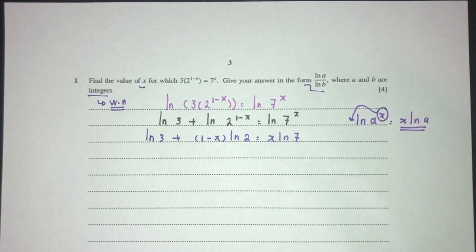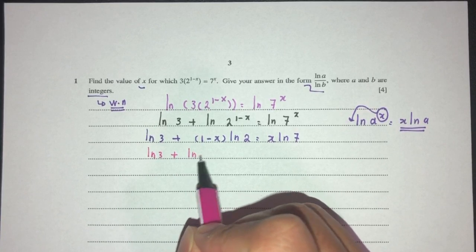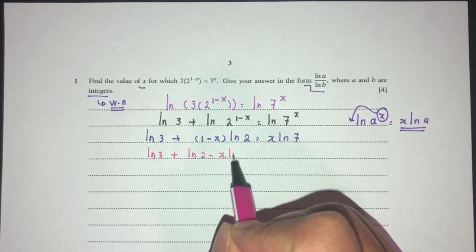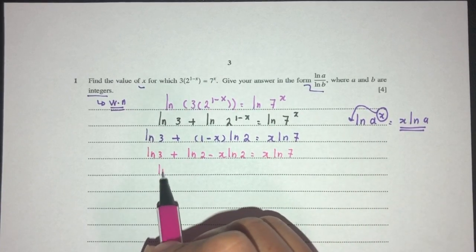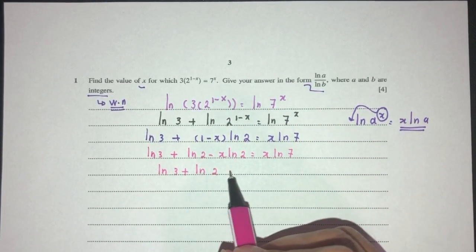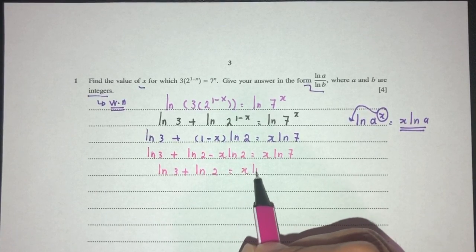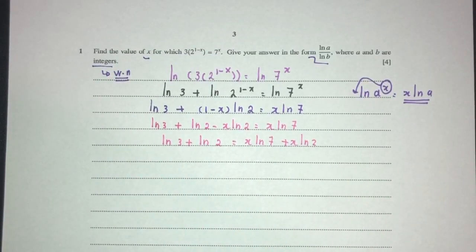We have to simplify, expand. That'll become ln 3 plus ln 2 minus x ln 2 equals x ln 7. Now ln 3 plus ln 2, send this one over here, will be x ln 7 plus x ln 2. Now simplify, let's see what happens.